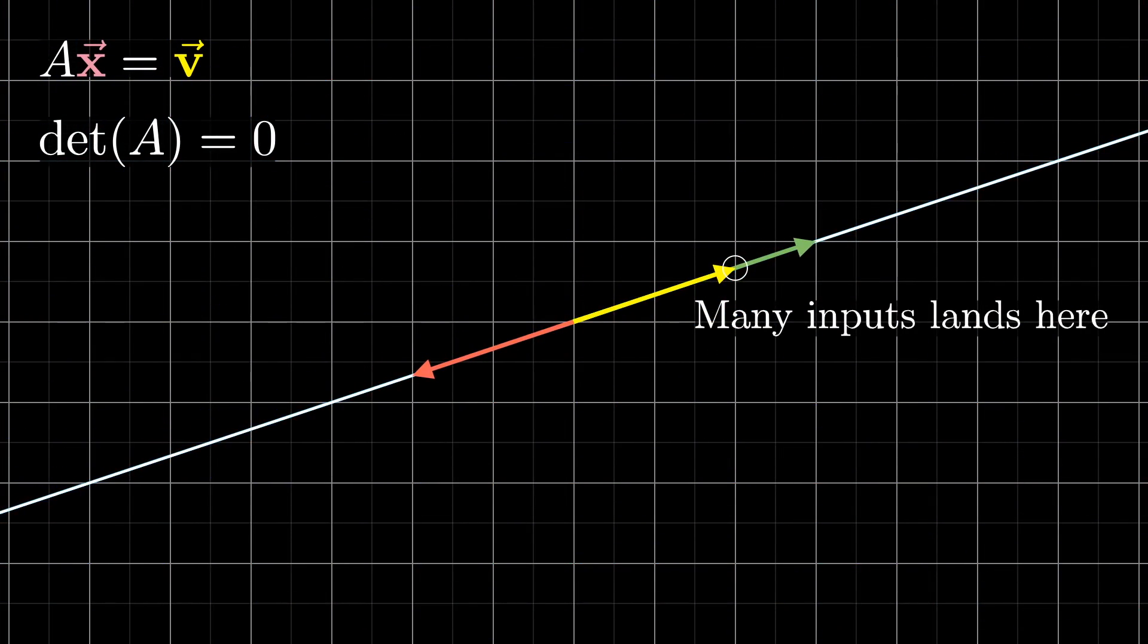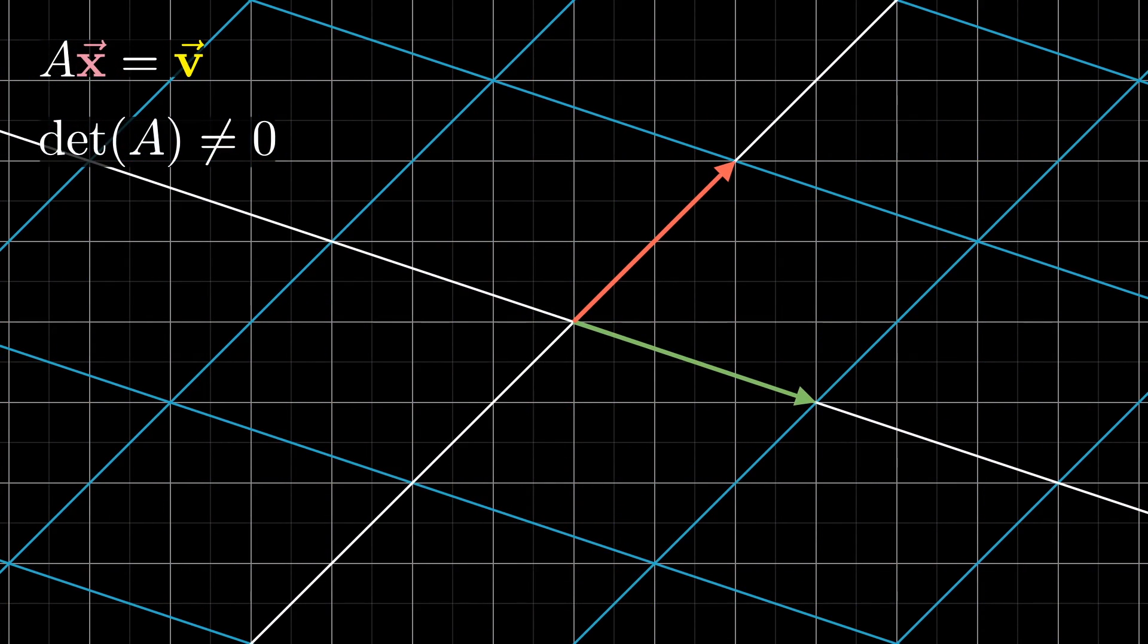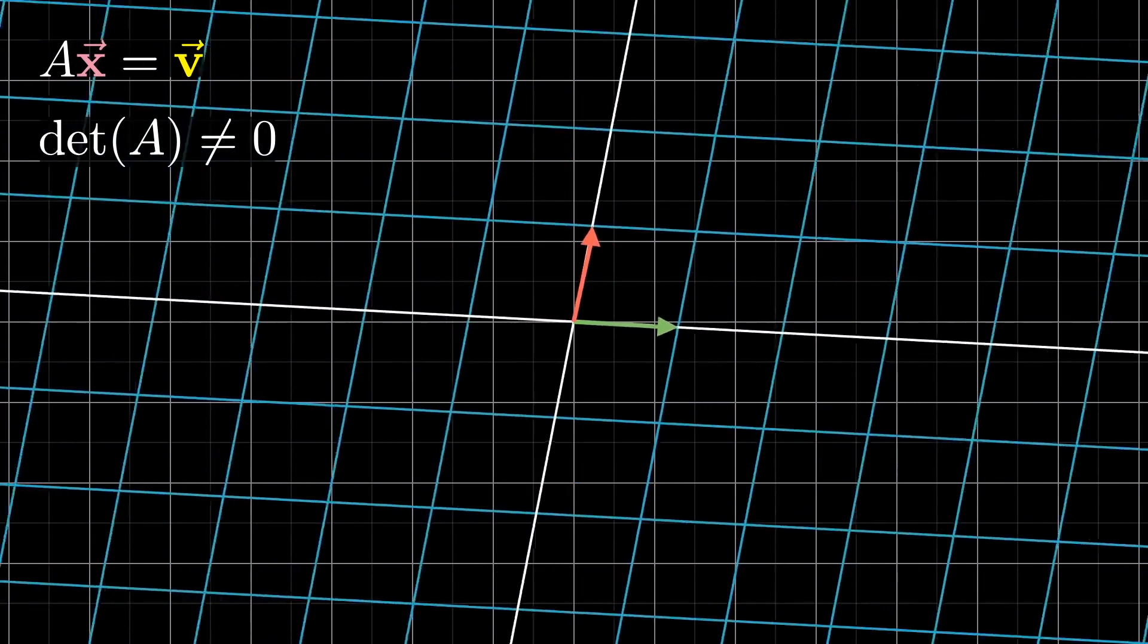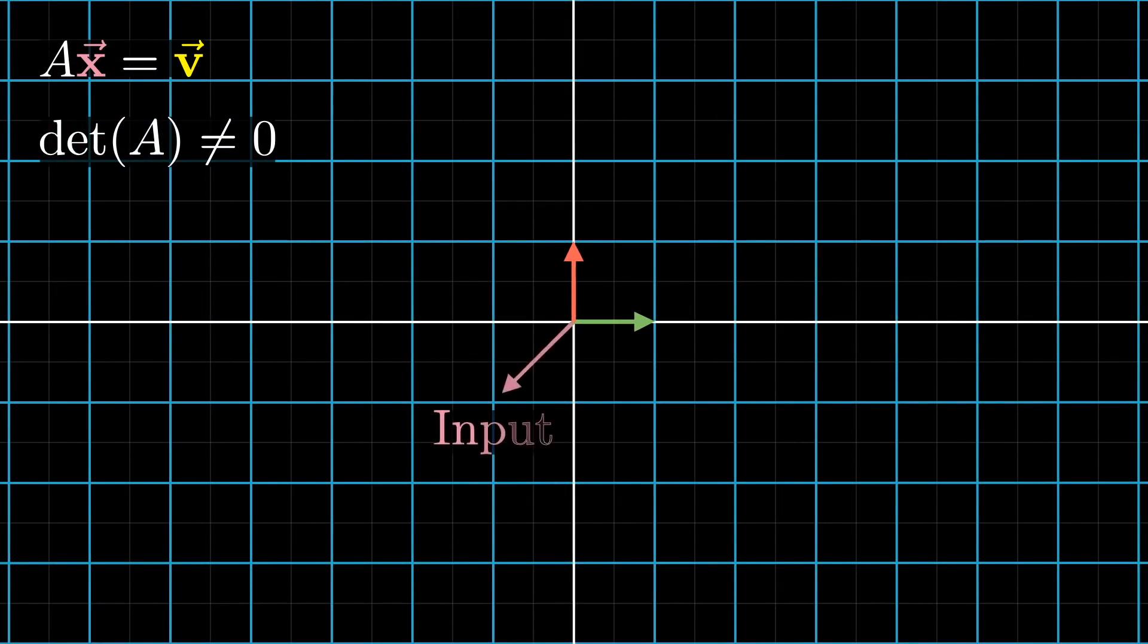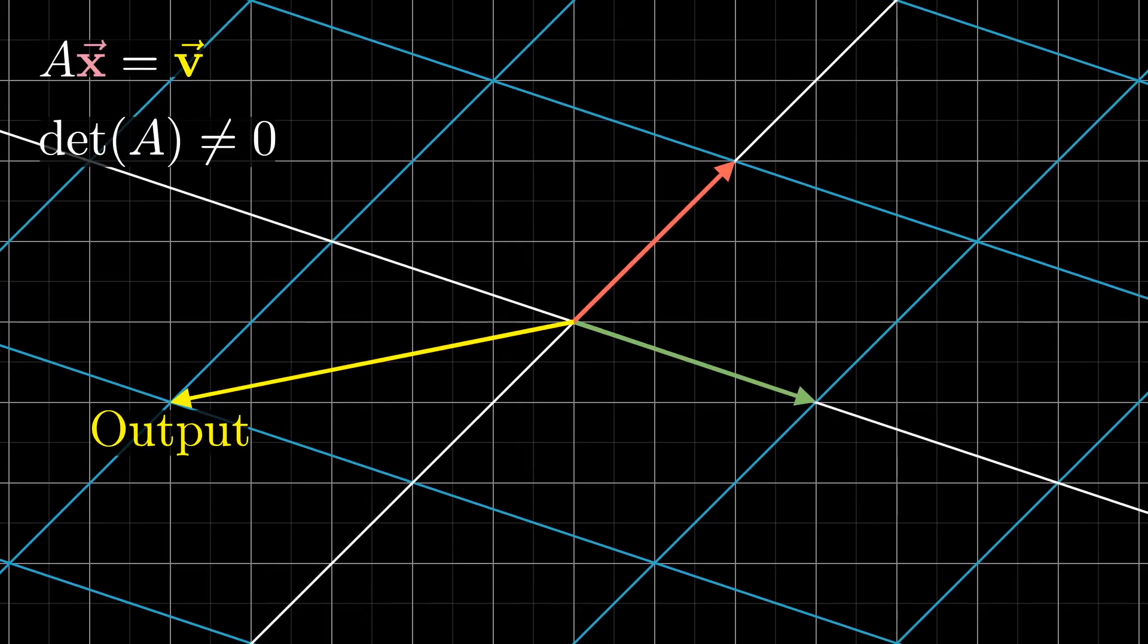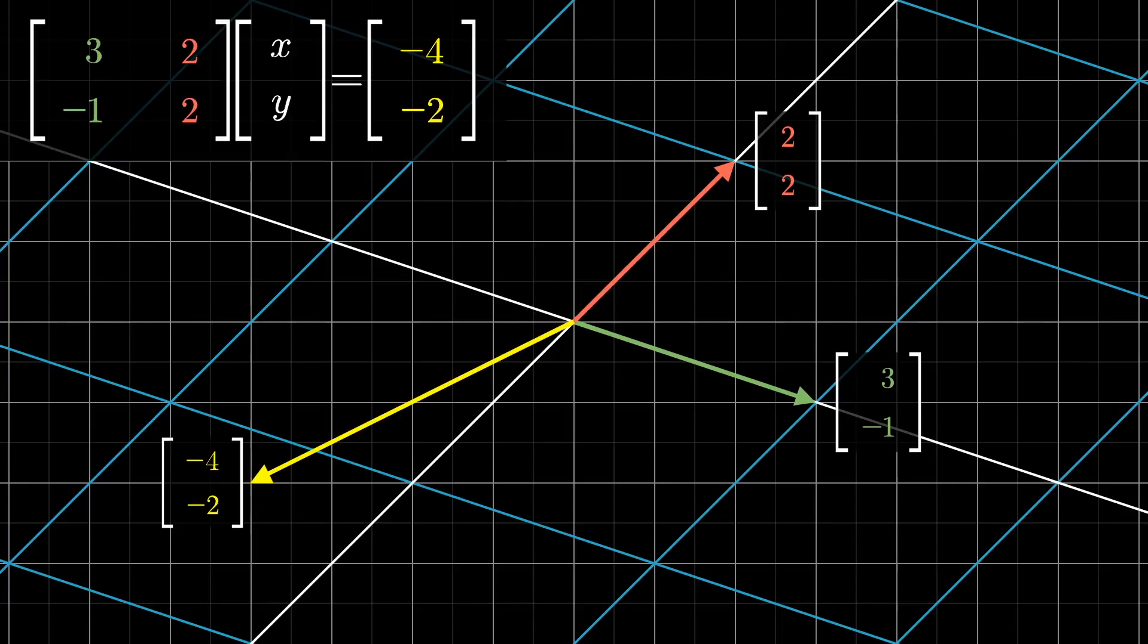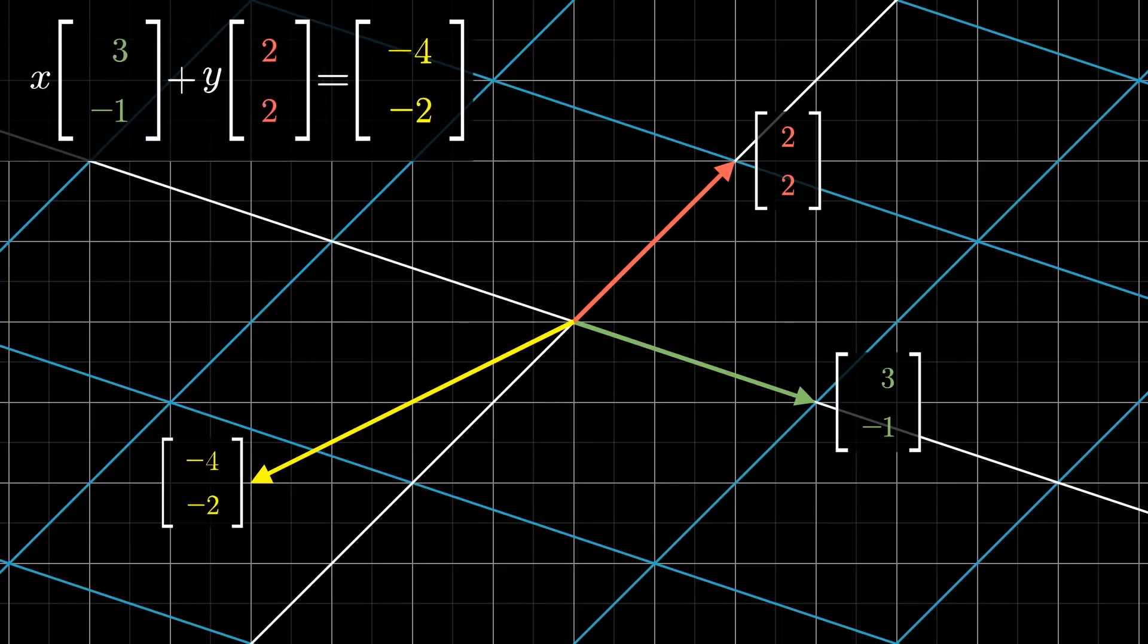But for this video, we'll limit our view to the case of a non-zero determinant, meaning the outputs of this transformation still span the full n-dimensional space that it started in. Every input lands on one and only one output, and every output has one and only one input. One way to think about our little puzzle here is that we know the given output vector is some linear combination of the columns of the matrix.